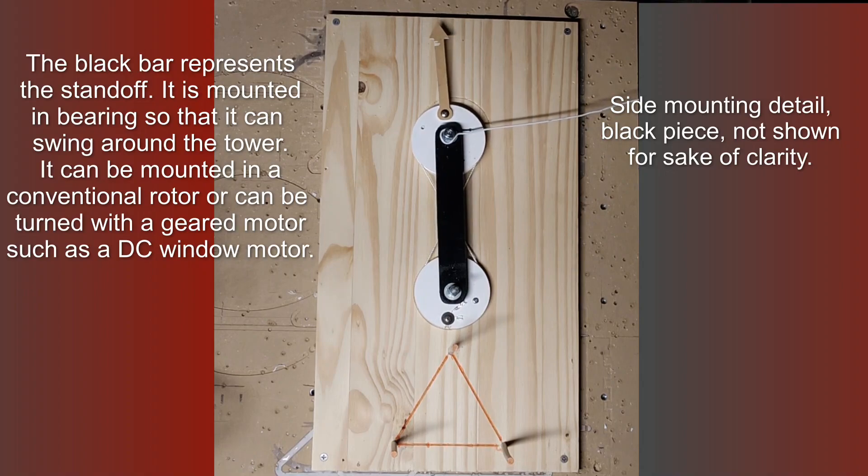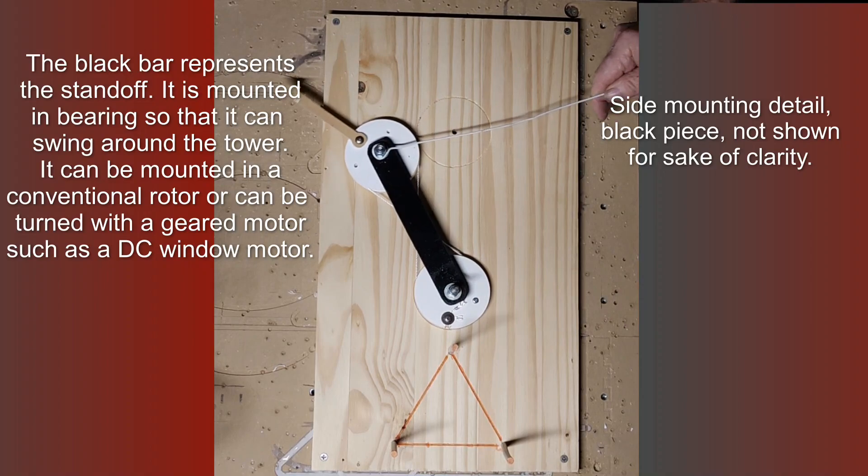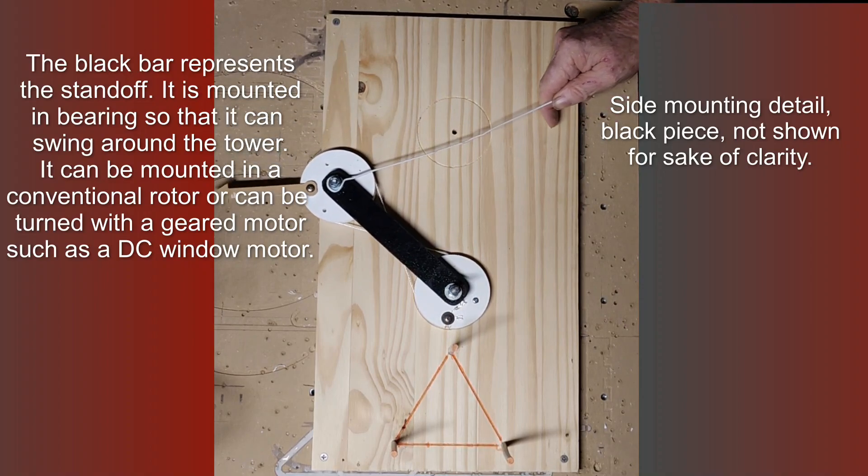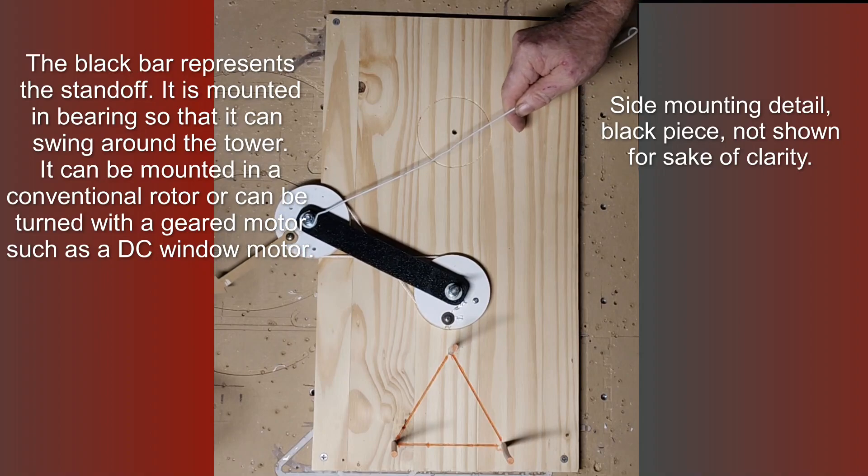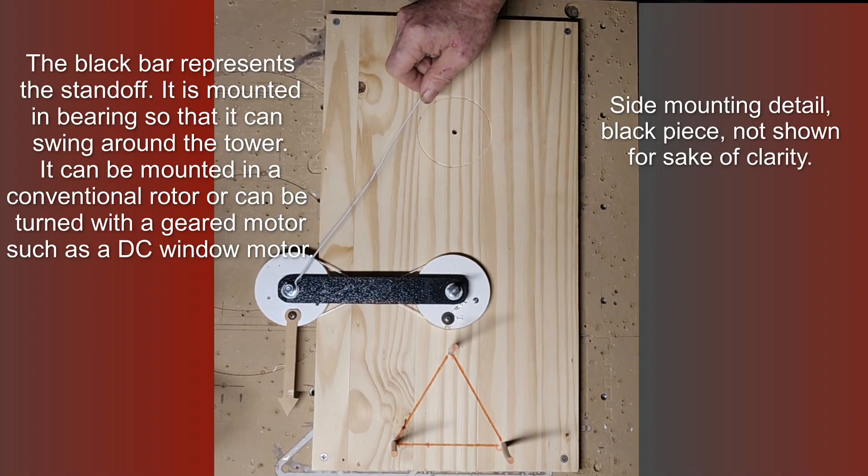So when you move this, you got a motor down here turning this, and when you move it, the one-to-one ratio, when it gets around here to 180 degrees, or 90 degrees from where it started, it's pointed south.